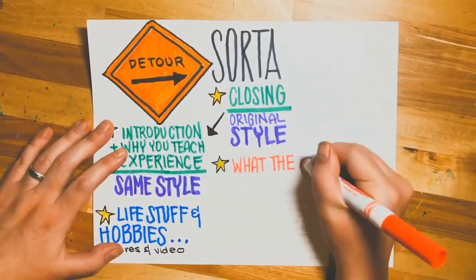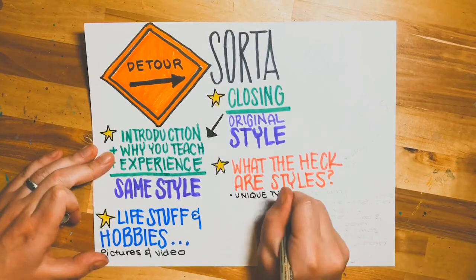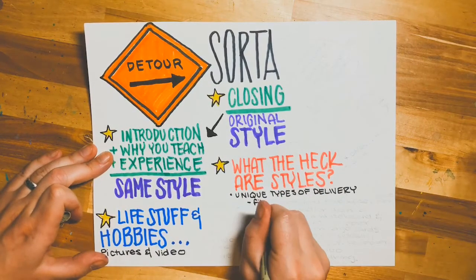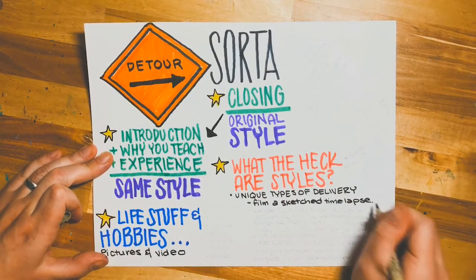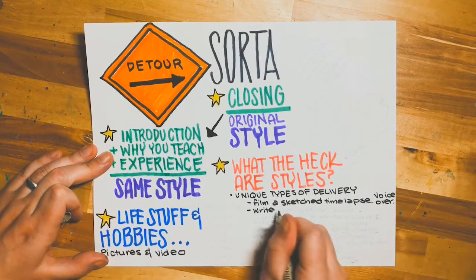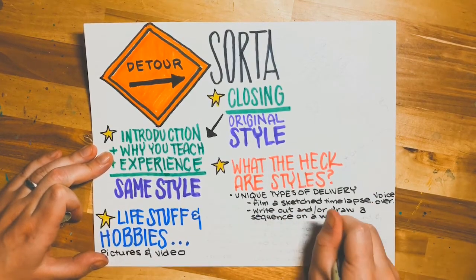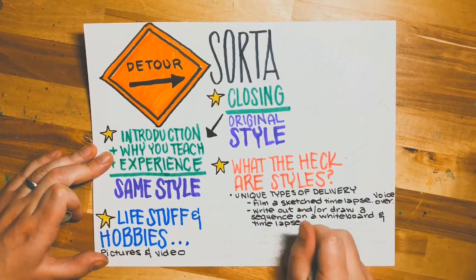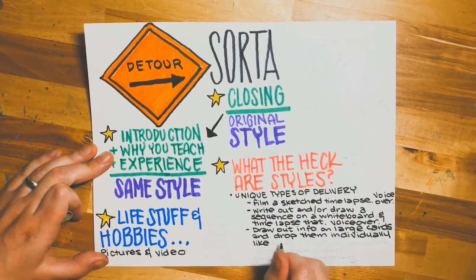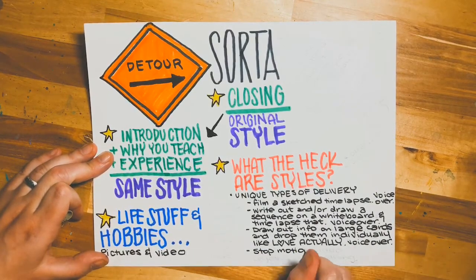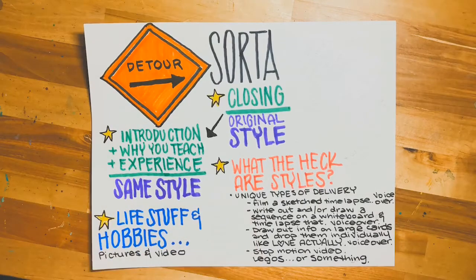So what the heck are styles, you might ask? Well, they're a unique form of delivery. The style of this video is me filming a sketched time-lapse of my hands on paper and then doing a voiceover. Other types are writing out or drawing a sequence on a whiteboard and time-lapsing that with a voiceover, drawing out information on large cards and dropping them individually like they did in Love Actually with a voiceover, or doing a stop-motion video with Legos. The possibilities are really endless, and I can make a video for each of those processes, but I'll probably make one later.